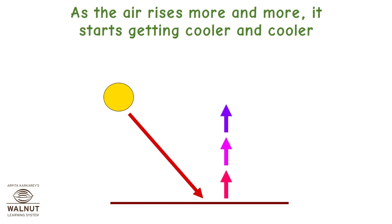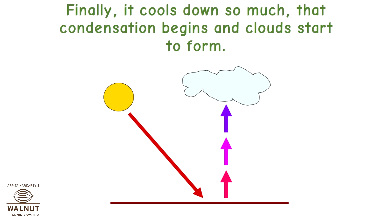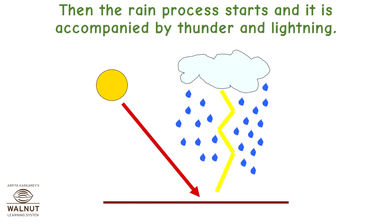As the air rises more and more, it starts getting cooler and cooler. Finally, it cools down so much that condensation begins and clouds start to form. Then the rain process starts and it is accompanied by thunder and lightning.